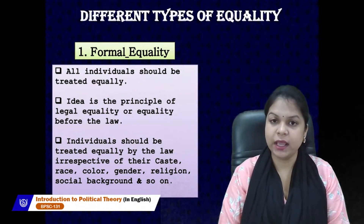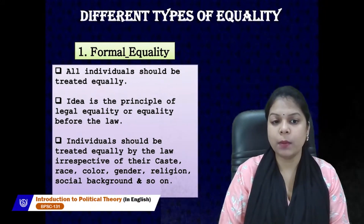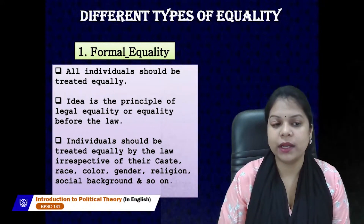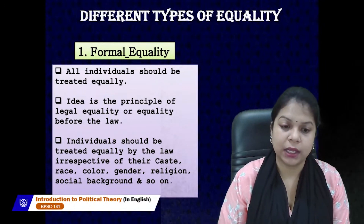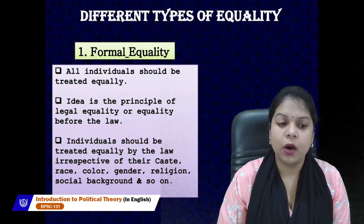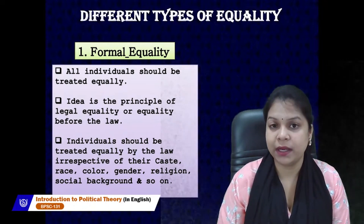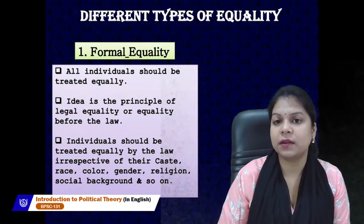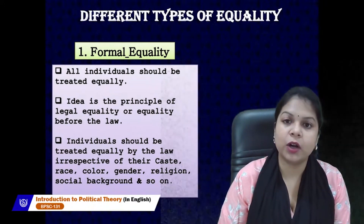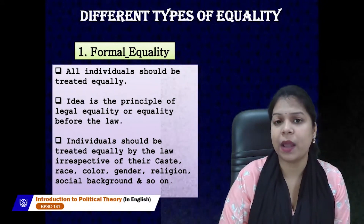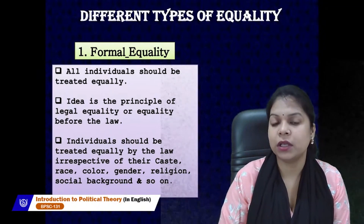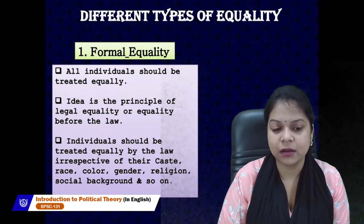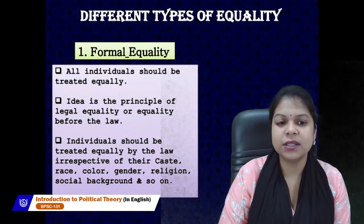Let's talk about different types of equality. Formal equality is about treating every individual equally — the principle of legal equality or equality before law. In front of law, nobody will be discriminated because of their educational, economic, or social background, or because of class, caste, religion, or gender. Whether it is the judge of the court or the prime minister, nobody will be discriminated based on their background.